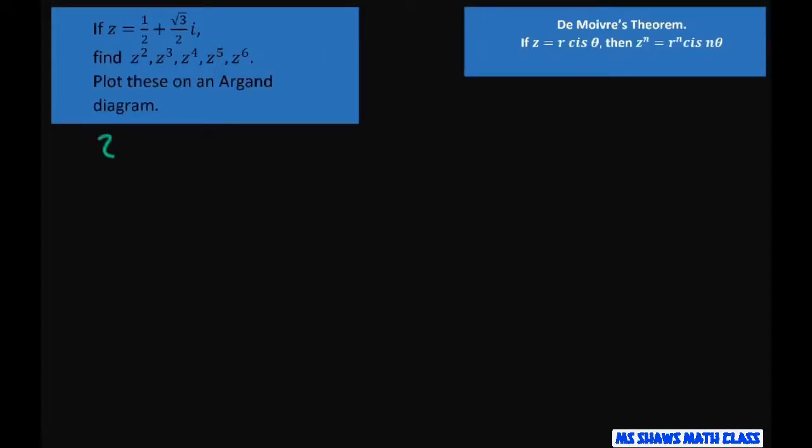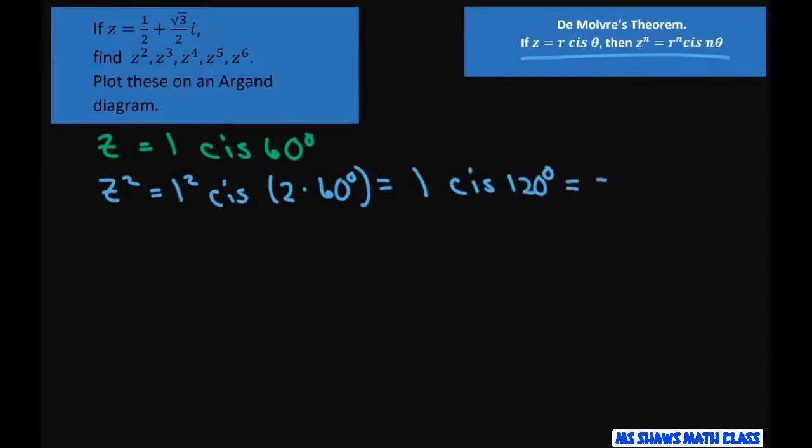We have z = 1 cis 60°. So z² equals 1² cis (2 × 60°), using the theorem. This equals 1 cis 120°, which equals -1/2 + (√3/2)i.